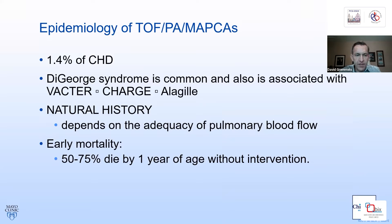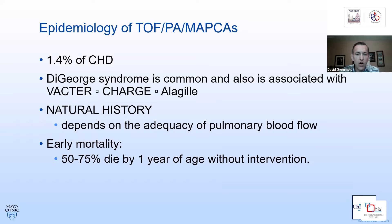The epidemiology of MAPCAs: this represents about 1% of heart disease. Looking at patients with Tetralogy of Fallot, about 20% have pulmonary atresia — the more severe form. A number of these patients have DiGeorge syndrome, quite commonly with a right aortic arch. They can also have CHARGE or Alagille syndrome. The natural history depends on the adequacy of pulmonary blood flow. With significant stenosis in the vessels, we see cyanosis; large vessels can cause over-circulation. Without intervention, there is high early mortality — 50–75% of patients will die within the first year of life.